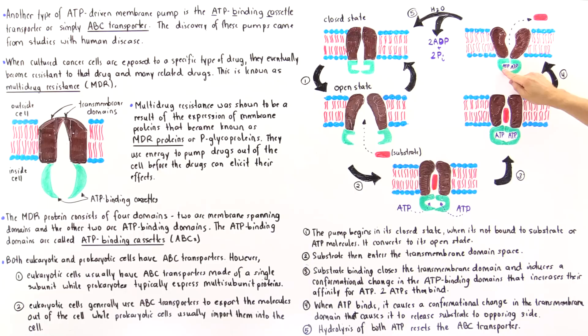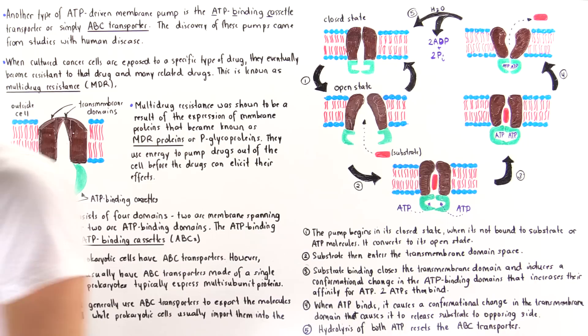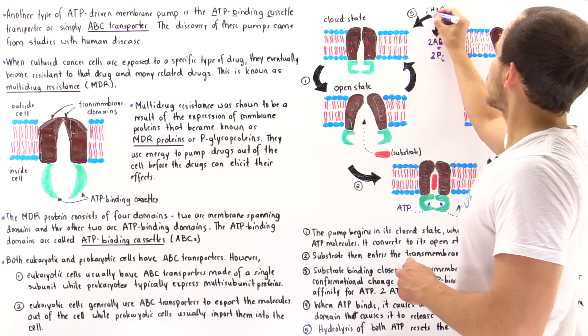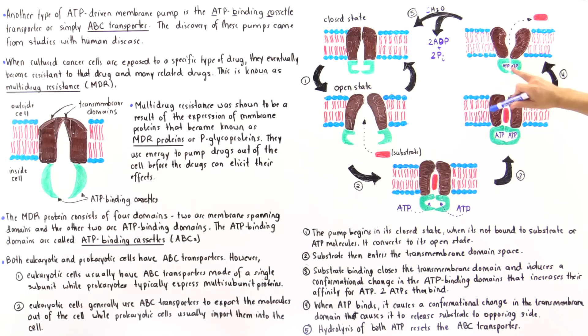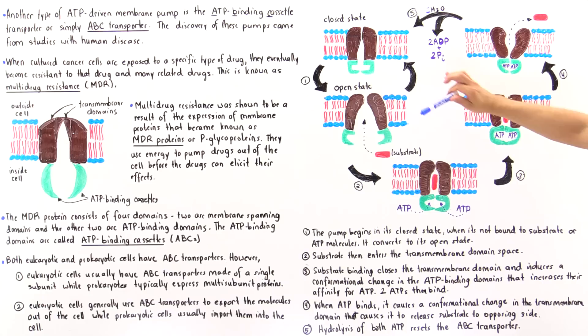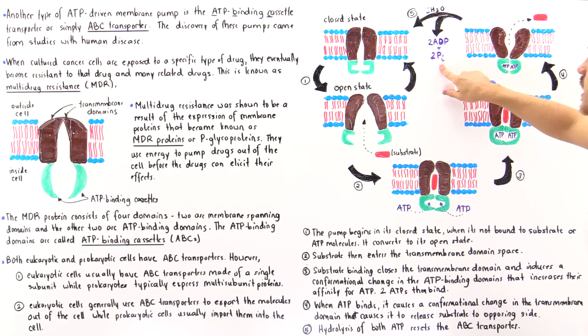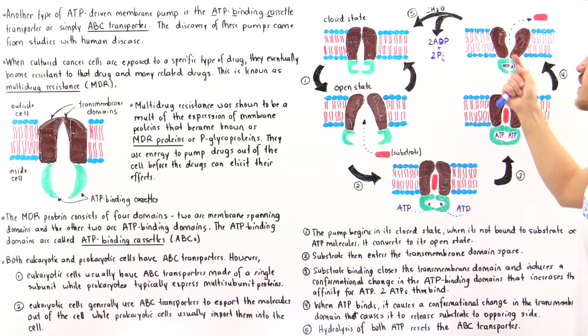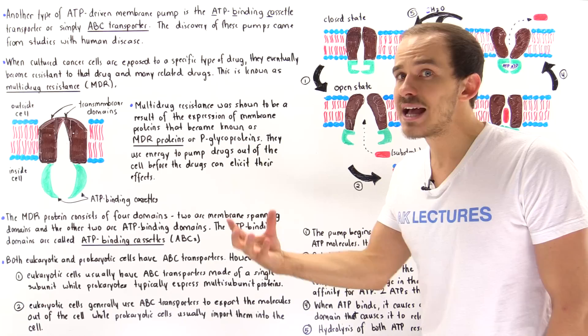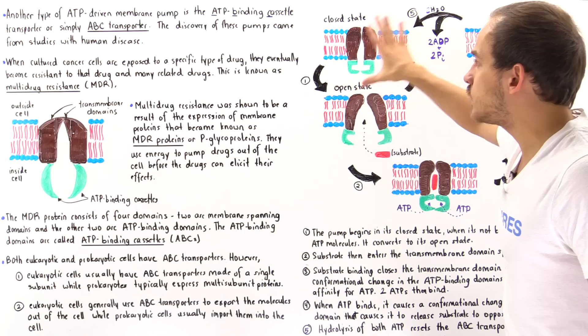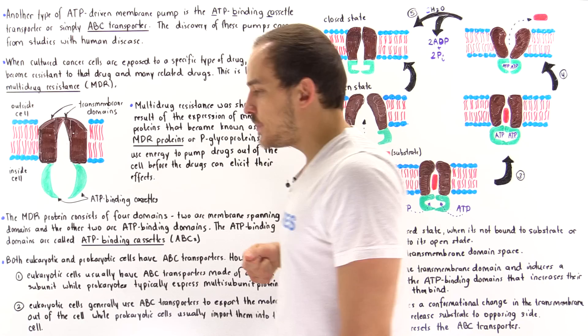The final step in this process is that the two ATP molecules are hydrolyzed using two water molecules — one water molecule per ATP. This produces and releases two ADP molecules and two phosphate molecules. The hydrolysis and removal of these ATP molecules resets the entire conformation of the protein, returning it to the closed state so the cycle can repeat itself.